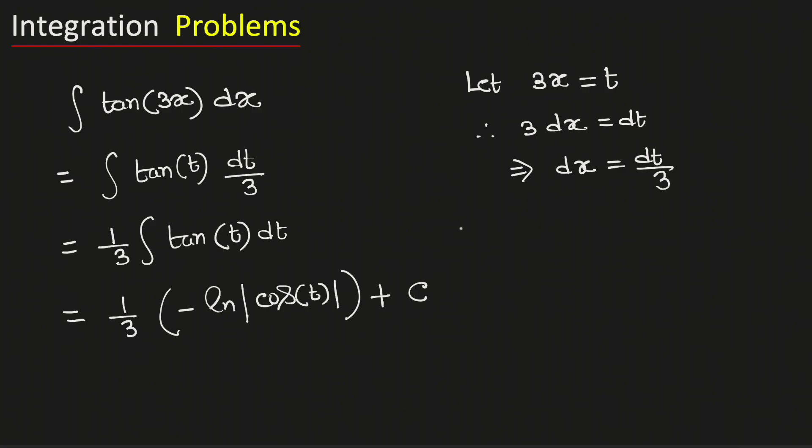Now substituting back t = 3x, the integral of tan(3x) equals negative ln of cos(3x) divided by 3, plus the integral constant C. This is our final answer.